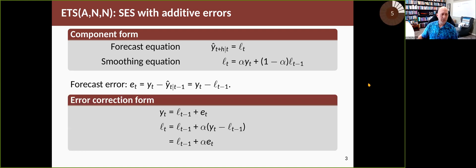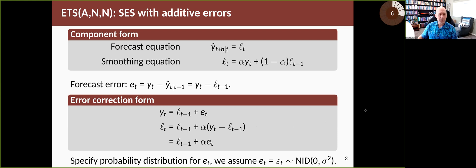And then we can therefore rewrite the first lot of equations in this other form, which is called the error correction form, where your observation yt is simply the previous level plus an error. Your level can be written in this form, which therefore can be written in this form. So it's just a bit of rearrangement, but it introduces the idea of the forecast error in the equation.